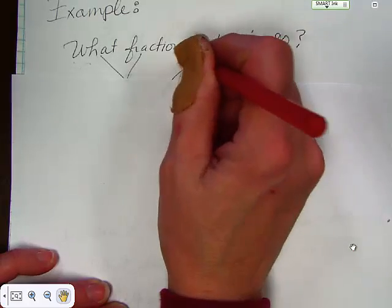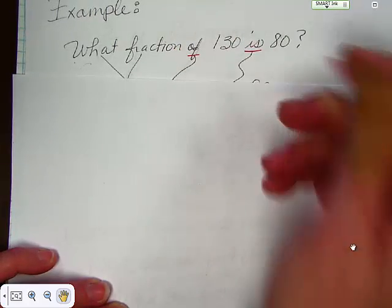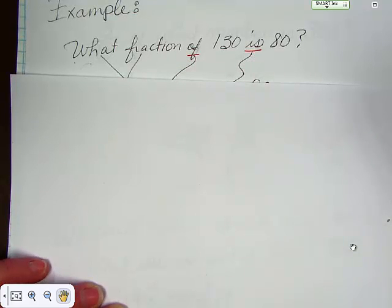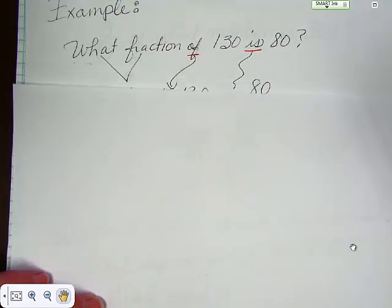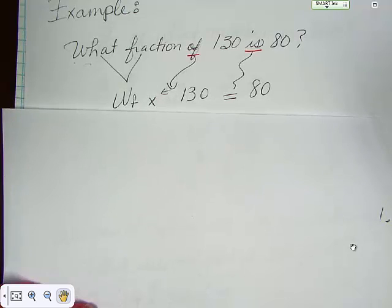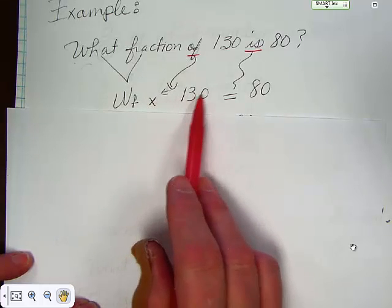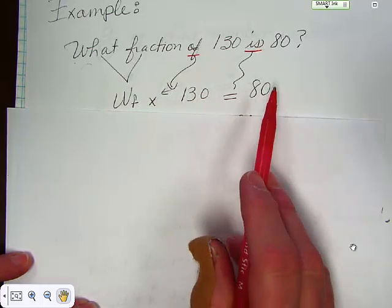Well, right here you see the of and is, and you already know, of is going to mean multiply, is is going to mean equal. And then what fraction is what you are missing. So we would rewrite it as: what fraction times 130 equals 80?